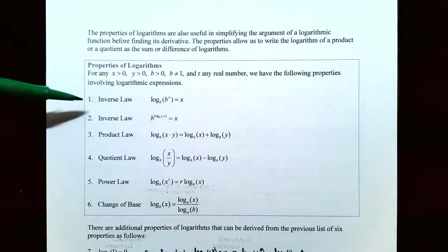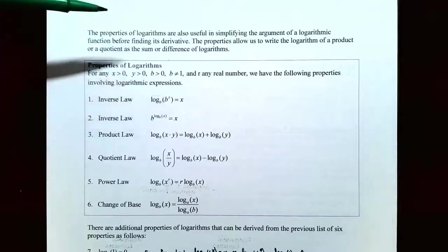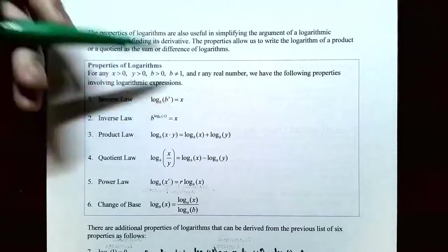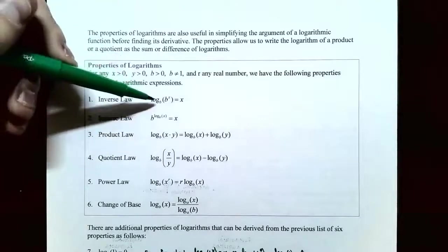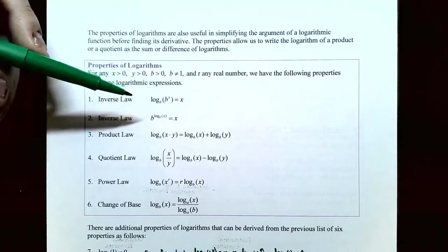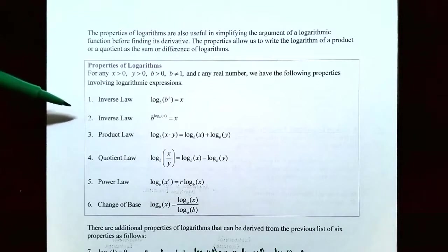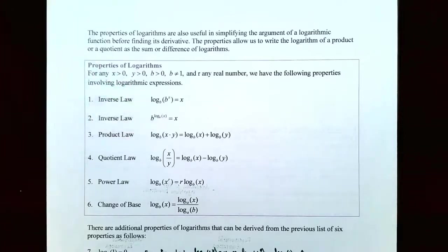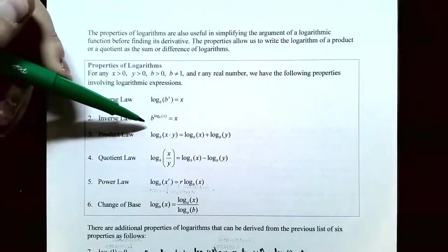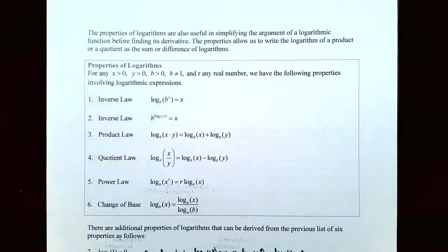Property 1 is called the inverse law: log base b of (b to the x) equals x, because the logarithm asks what power on b gives b^x — it has to be x. So the logarithm base b and the exponential expression base b cancel each other out, leaving just the exponent x. Property 2 is another inverse property: b raised to the power log base b of x simplifies to just x, because the log and the exponential with the same base cancel, leaving the argument x.